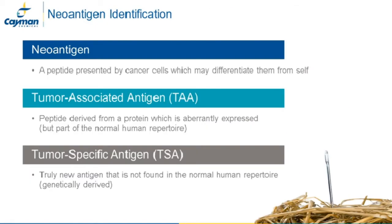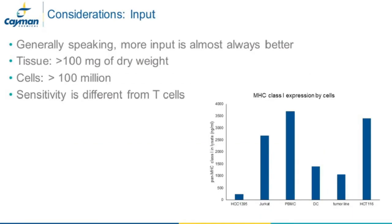The vast majority of peptides identified in immunopeptidome profiling experiments are derived from normally expressed proteins. But if neoantigen identification is the goal, we are looking for a needle in a haystack. Tumor-associated antigens are part of the normal human MHC repertoire that may not be normally expressed in the tissue the tumor derives from—identification requires comparison with normal tissue peptide lists. Tumor-specific antigens, on the other hand, are derived from completely new proteins such as indels, translocations, or other mutations, and may provide greater potential for immunogenicity.